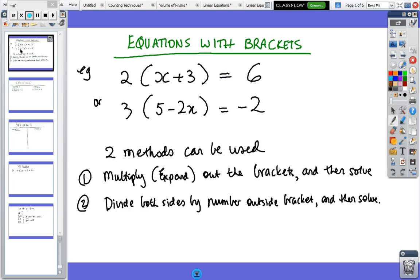I'll show you two methods and both methods are legitimate. You can decide which one works, and sometimes it's easier to do one than the other. The first method is multiply out the brackets and then solve the linear equation. The second way, which sometimes is quicker, is divide both sides by the number outside the bracket and then solve.